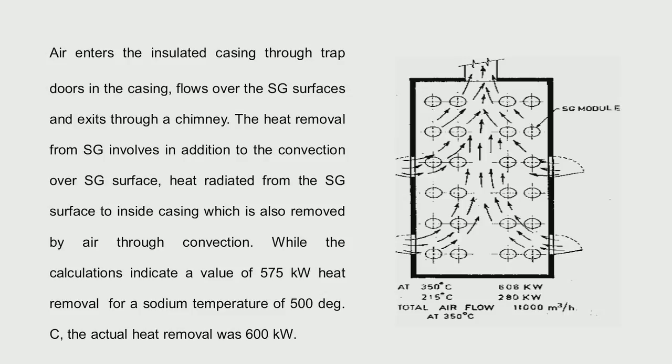Natural convection is important for when off-site power is not there and your on-site diesels do not start. In any reactor there is decay heat in the core. Even though the reactor has shut down and the fission chain reaction has stopped, the fission products produced during fission reactions are still decaying and producing heat. If we don't remove that heat, it could heat up the fuel cladding and cause the clad and fuel to fail. So it is very important to remove this decay heat.